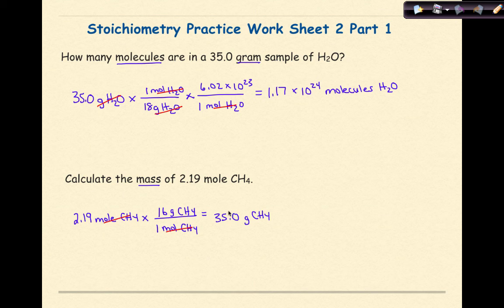Again, here you want to be looking at significant figures. 2.19 is 3 significant figures. 35.1 is 3 significant figures. It's the right answer.